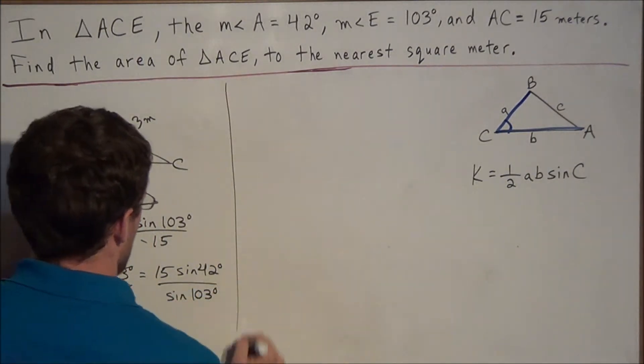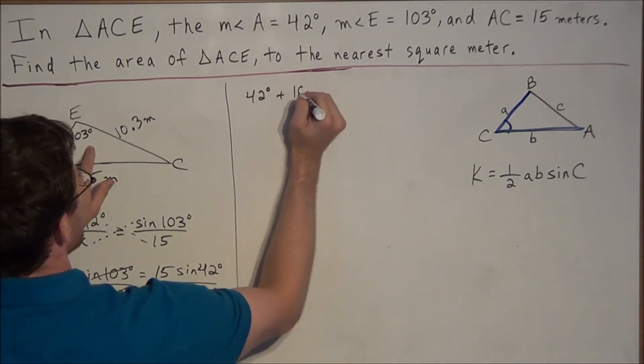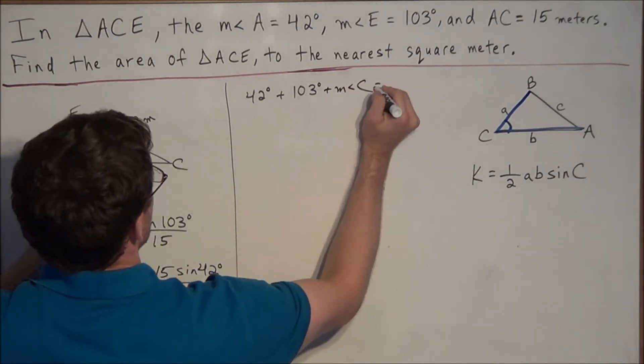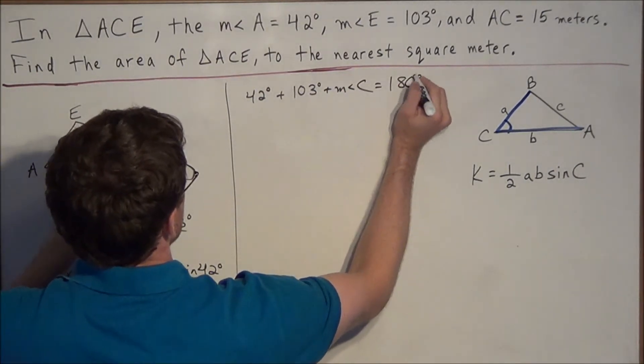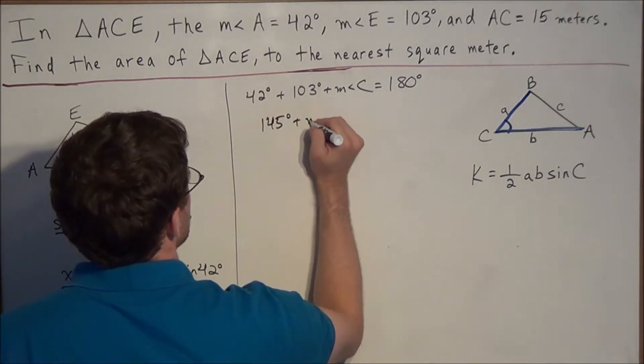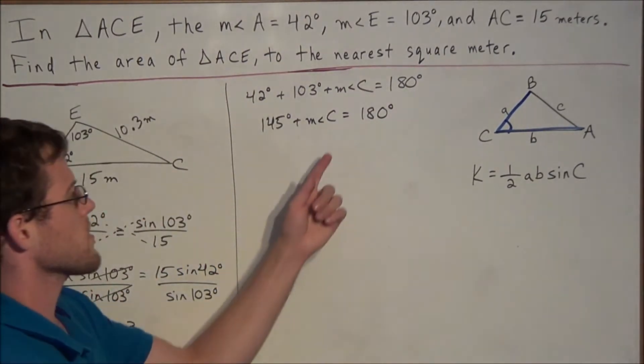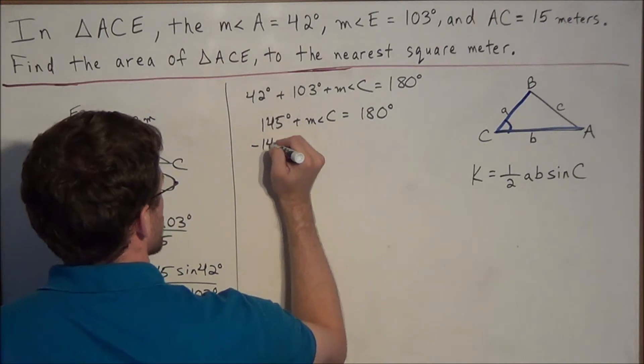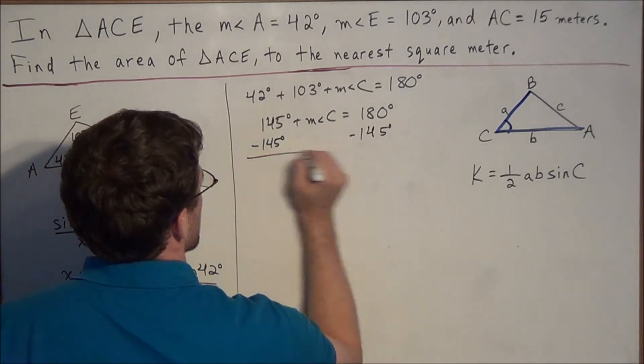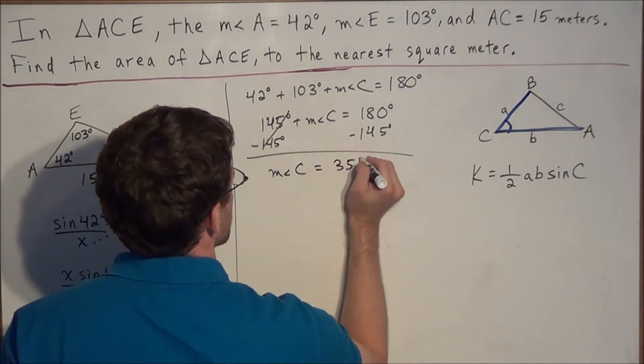So we're setting up the equation. We have 42 degrees plus 103 degrees plus the measure of angle C is equal to 180 degrees. So now we just combine like terms and we have 145 degrees plus the measure of angle C equals 180 degrees. So now to solve for the measure of angle C, we subtract 145 degrees from both sides. Now once everything simplifies, we have the measure of angle C is equal to 35 degrees.